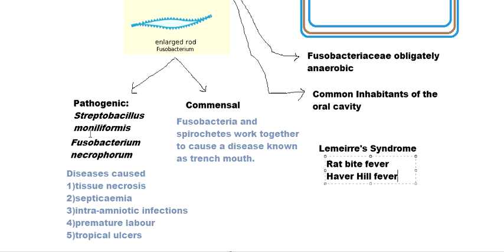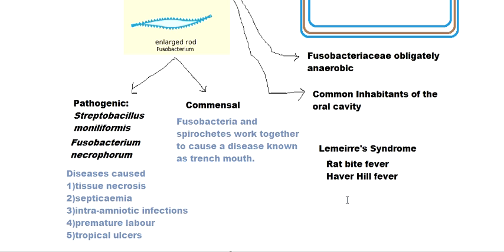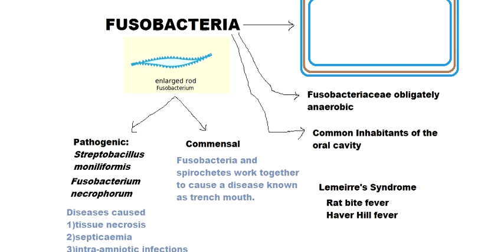These were some important diseases and characteristics of Fusobacteria. In the next video we will discuss Gemmatimonadetes, which is another gram-negative phylum. You can click on the link here to check out the next video. Hope you liked the video, bye.